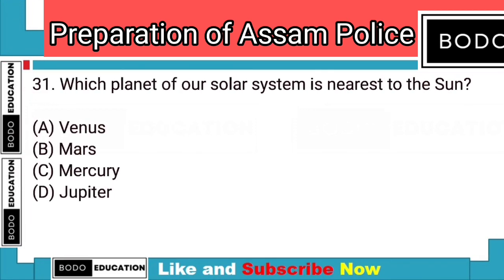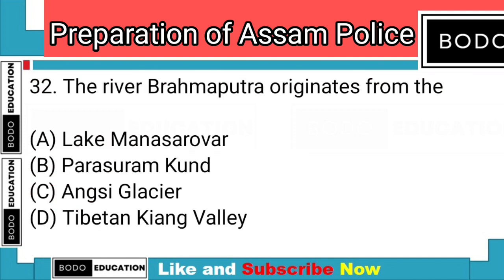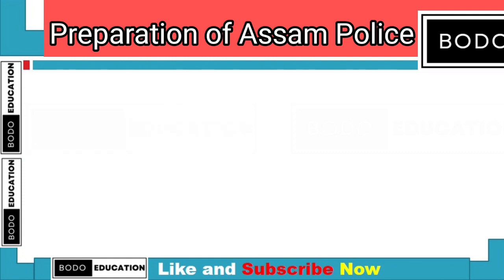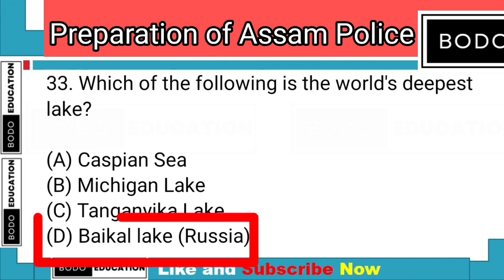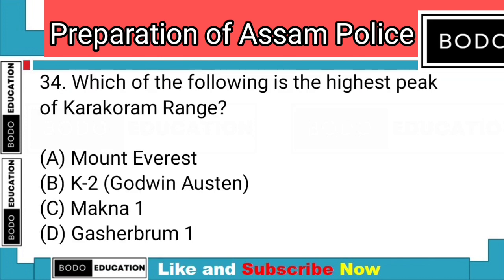Question number 31: Which planet of our solar system is nearest to the sun? Answer: Option C — Mercury. Question number 32: The river Brahmaputra originates from? Answer: Option A — Lake Manasarovar. Question number 33: Which of the following is the world's deepest lake? Answer: Option D — Baikal Lake in Russia.